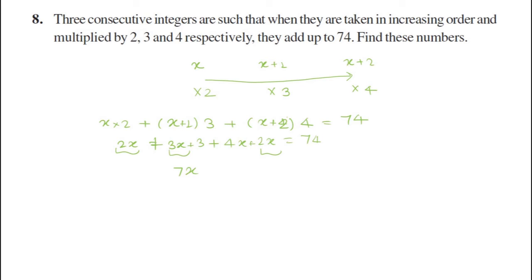Actually, there was some problem - 2x plus 3x plus 4x is 9x. So that will be 9x plus the constant terms. This constant and this is the constant - 3 plus 8 is 11.